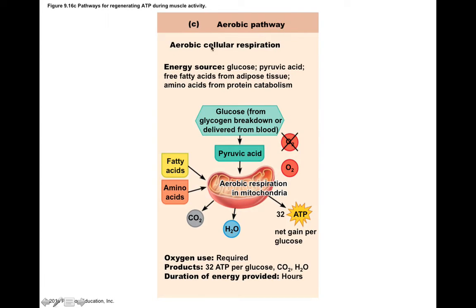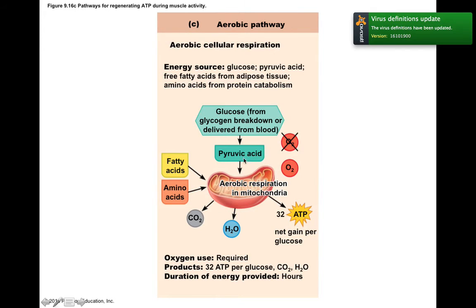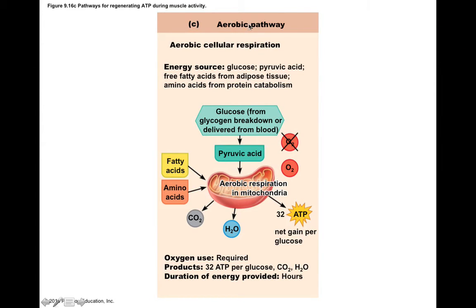To summarize the aerobic pathway: glucose from glycogen or the bloodstream is broken down via glycolysis into pyruvic acid, yielding a net two ATP. This does not require oxygen. Pyruvic acid then continues to the mitochondria and feeds into the Krebs citric acid cycle, along with fatty acids and amino acids. These components power a process called oxidative phosphorylation, which yields a net 32 ATP per glucose — far more than anaerobic pathways.